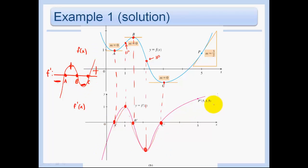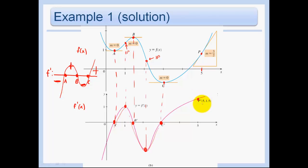Then I go and fill in the other appropriate things by looking at the graph. This point p — I have an x-coordinate of 5 and it looks like my slope is about 3 halves. Then on my f prime graph at the point p, I'm going to mark it with 5 and then the slope, which was 3 halves.